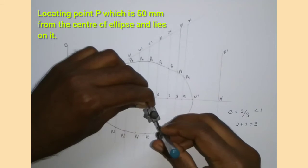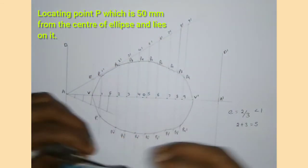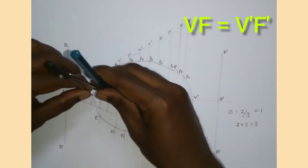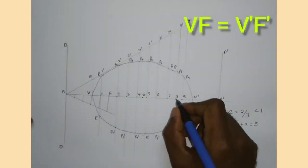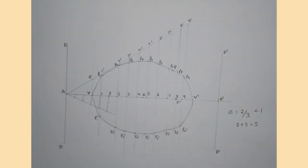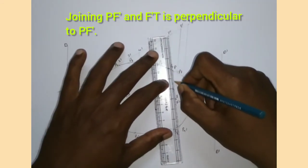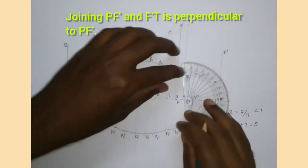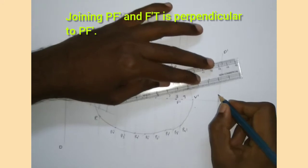I measure 50 mm on the compass and cut an arc on the ellipse — that point P is 50 mm from the center O. Now I measure the distance VF on the compass and from V' cut an arc on the major axis — that point is the second focus F'. I join P to F' with a straight line, then draw a line perpendicular to PF' from F', which meets the directrix at point T'.